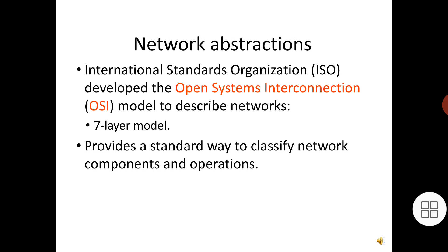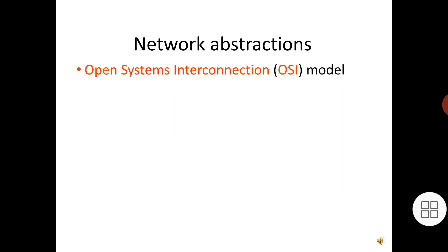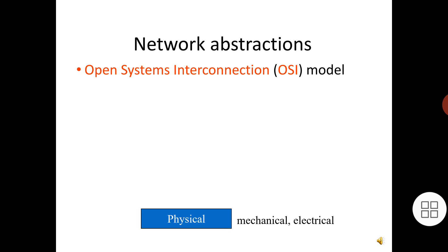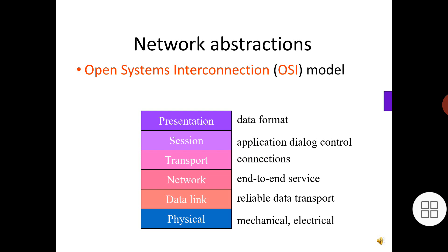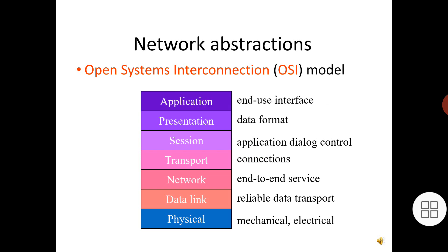Next, we look at network abstractions. The International Standards Organization developed the Open System Interconnection (OSI) model to describe networks. It is a seven-layer model that provides a standard way to classify network components and operations. The seven layers are: physical layer, data link, network, transport, session, presentation, and application layer. Networks are complex systems that ideally provide high-level services while hiding many details of data transmission.